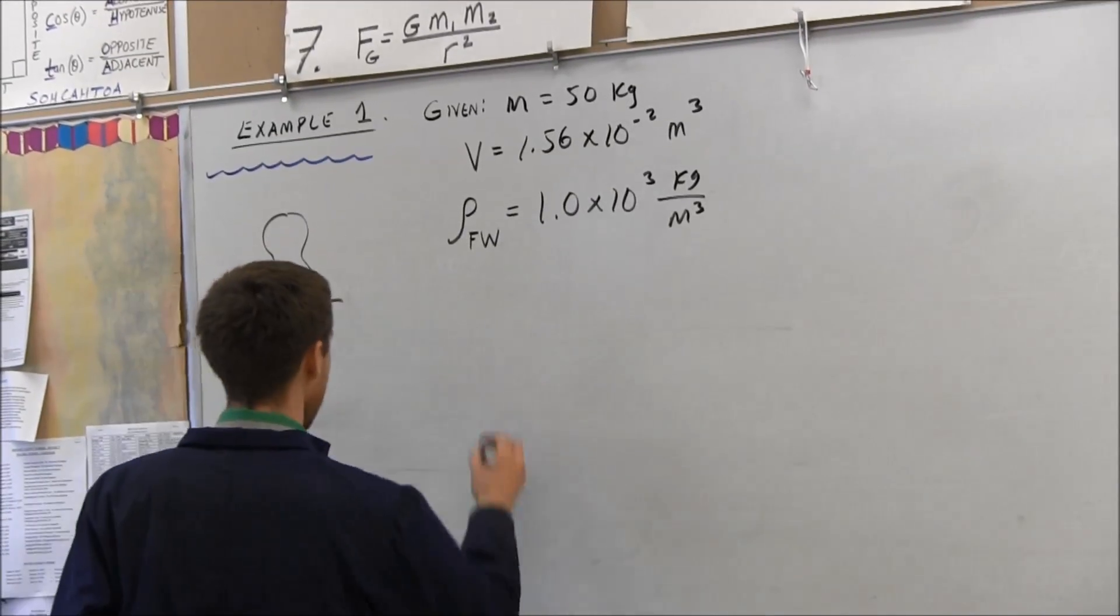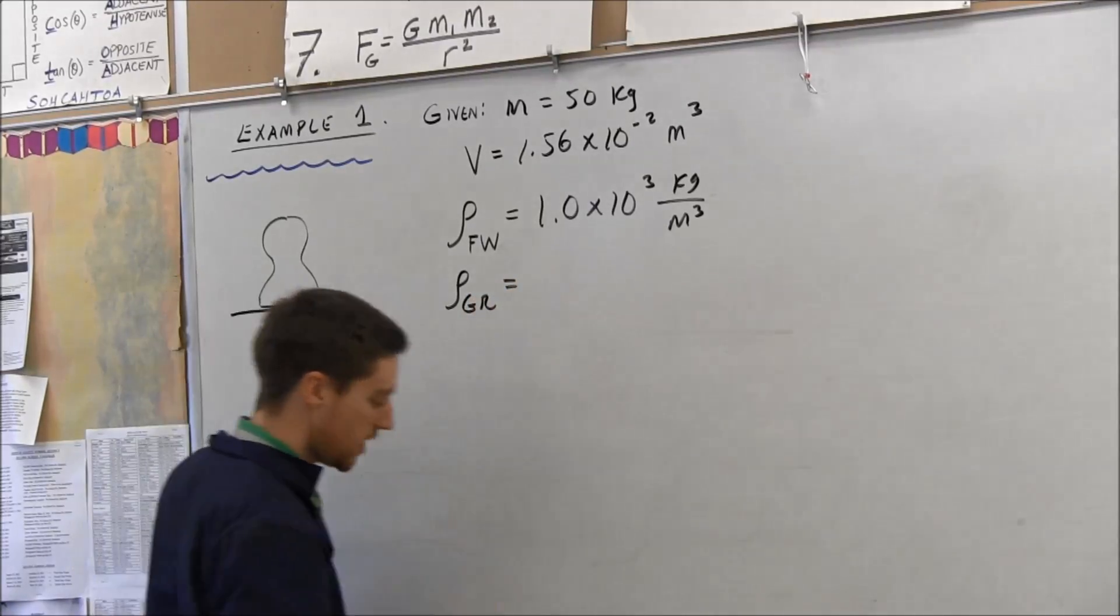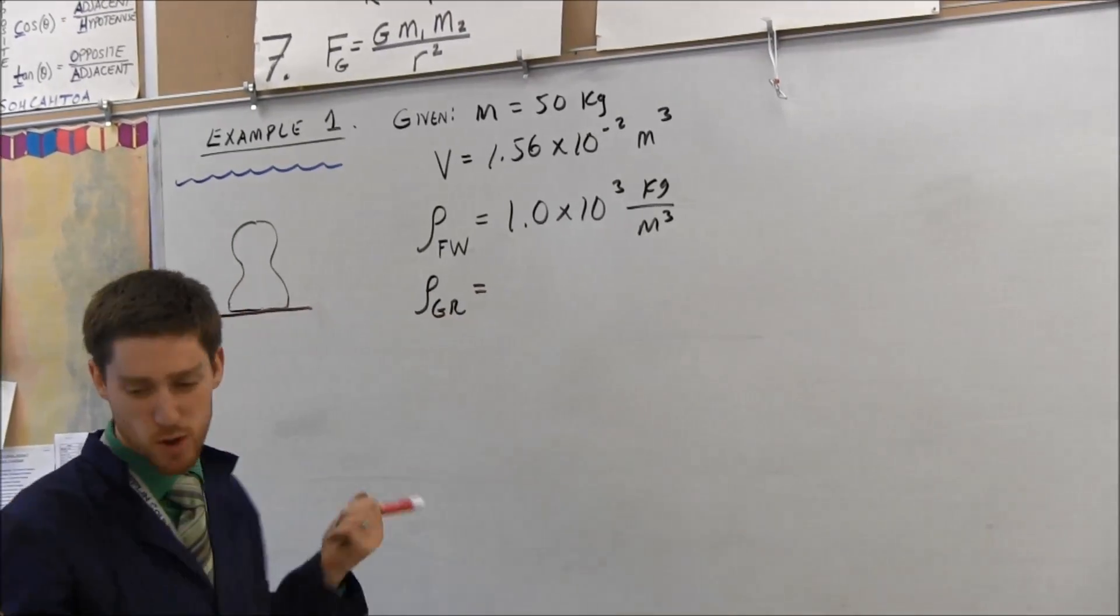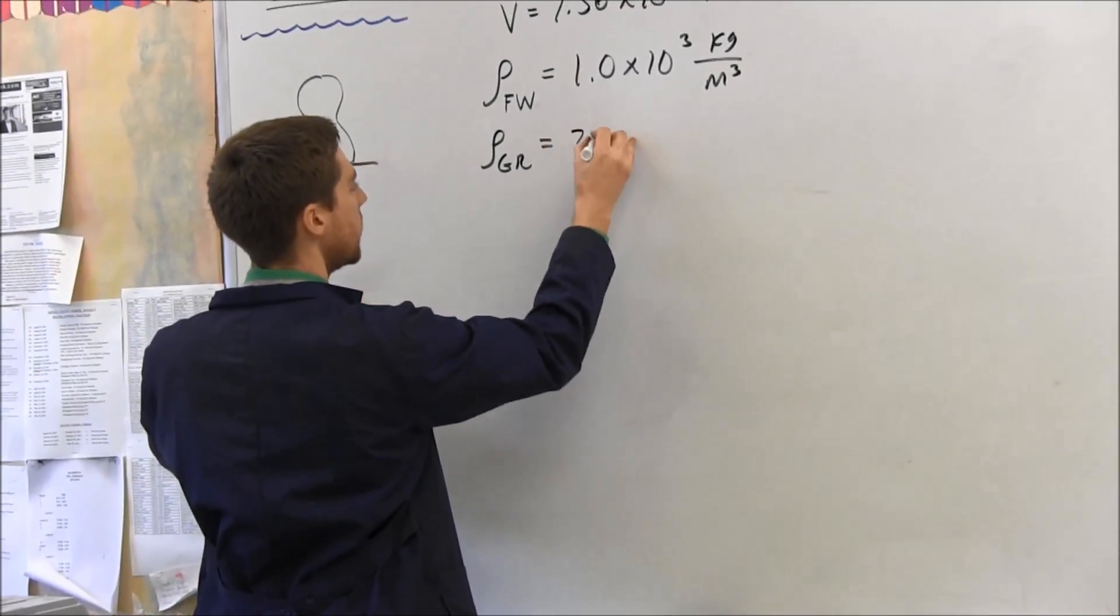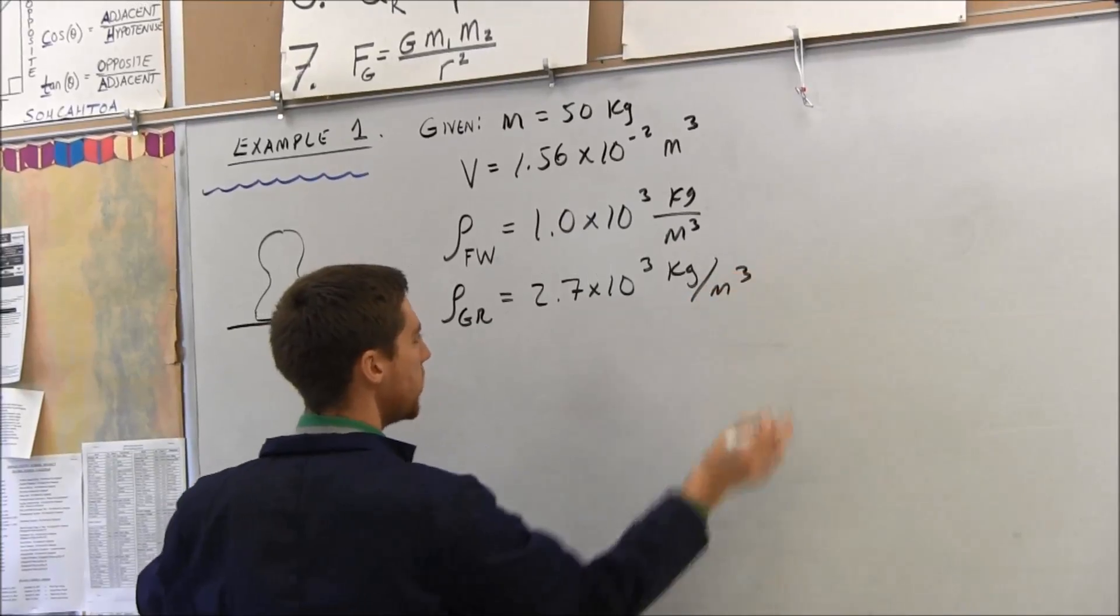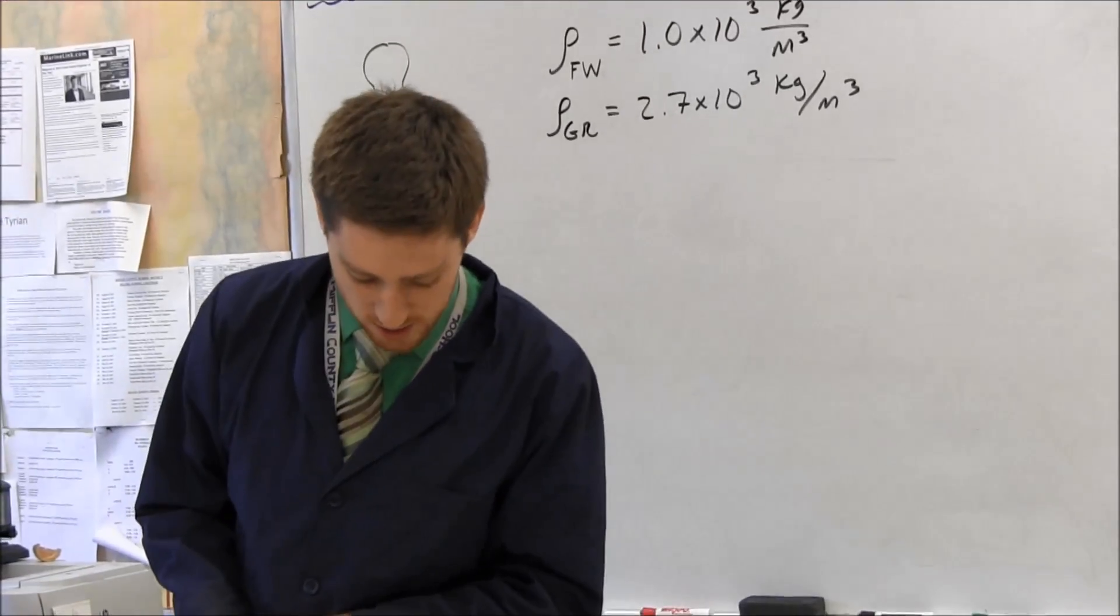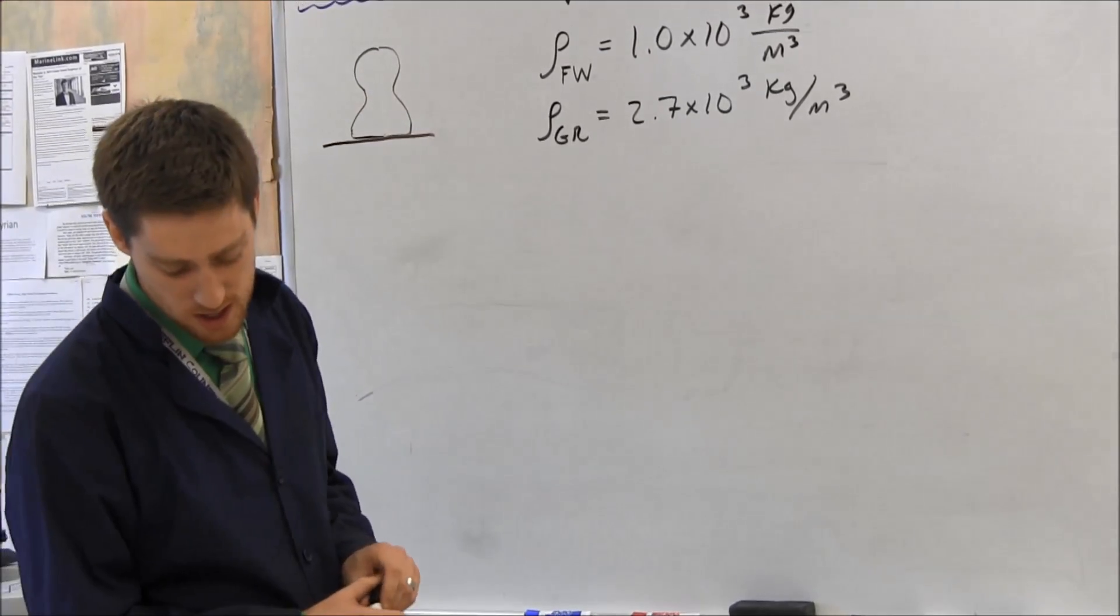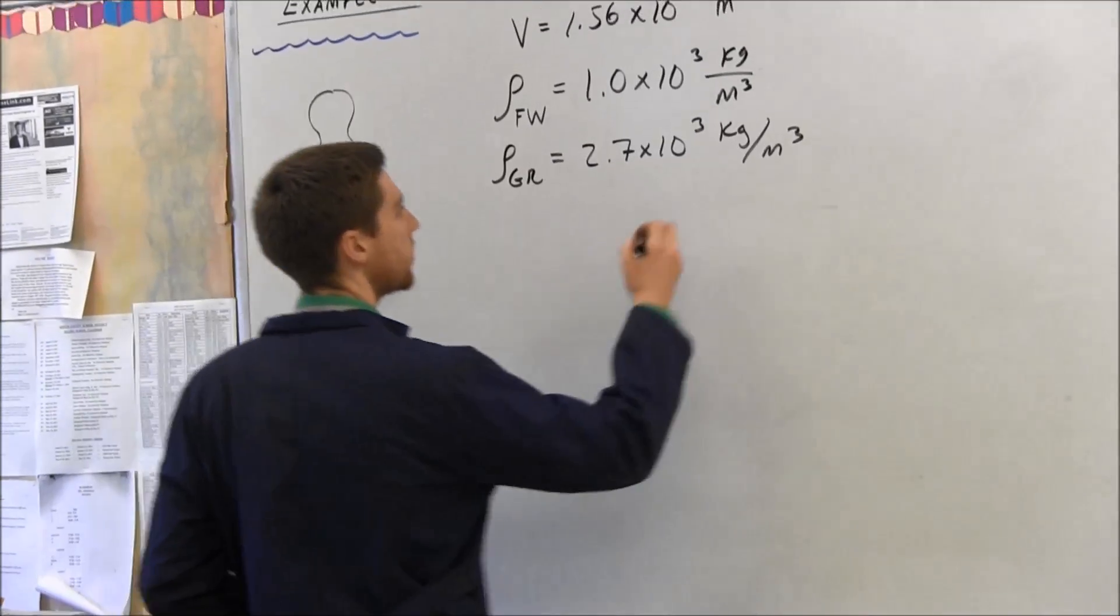They also give you the density of granite. And this is often a trouble spot, which one do you use when you calculate buoyant force? Granite is 2.7 times 10 to the 3 kilograms per cubic meter. So you look at that nice list of givens. They want us to find, determine the buoyant force.